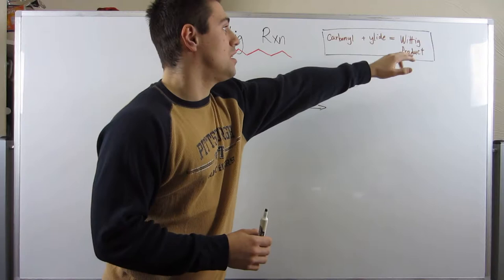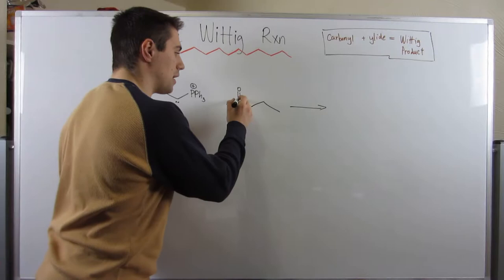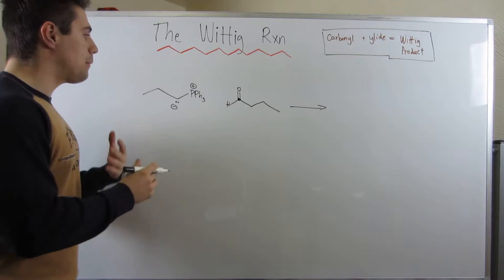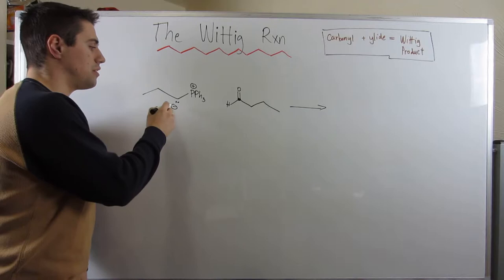So clearly we definitely have a carbonyl right here. I'm going to kind of dot this carbonyl carbon, give them a thick dot. And then we have something called a ylid over here. And here's what a ylid is. A ylid is whenever you have a negative charge and a positive charge next door to each other. That's it.